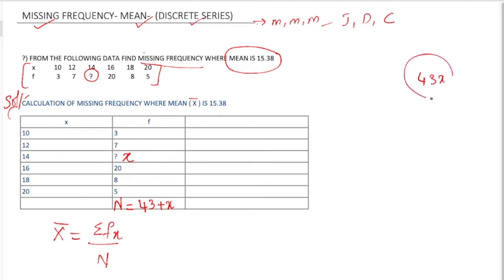Whenever you are adding a variable you need to add separately. You cannot write it as 43x. When you are multiplying then you can write 43x, but if you are adding then you have to keep it separate: 43 plus x.